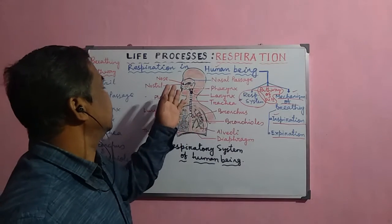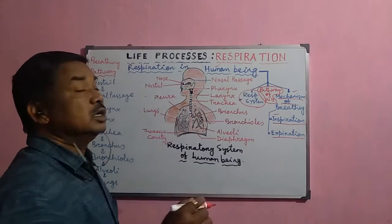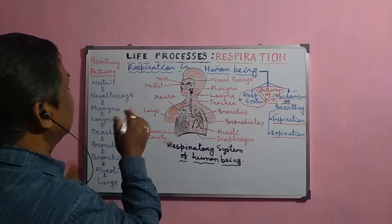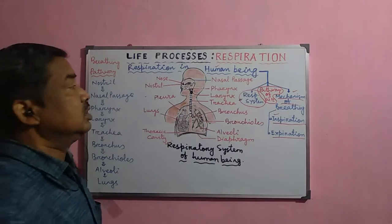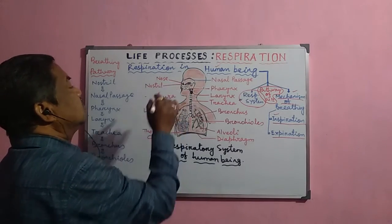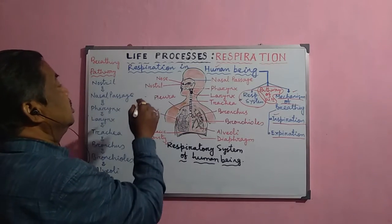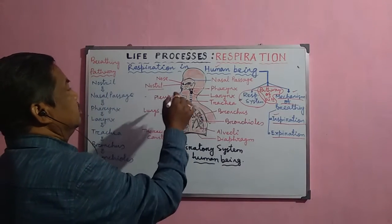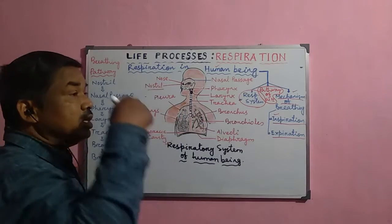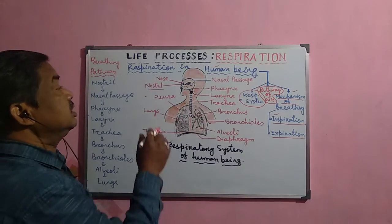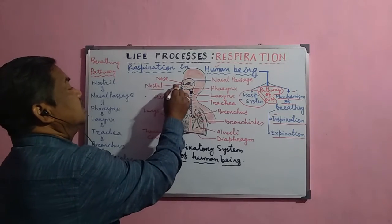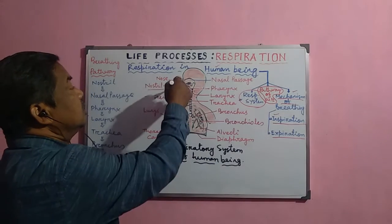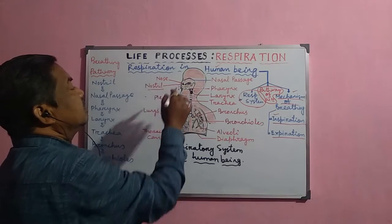Now, the important organs involved in the respiratory system: first is the nose, which is the external outgrowth consisting of cartilage. There is an opening through which air enters into the nasal passages, called the nostril. This opening faces downward, which is advantageous because particles in the air fall down due to gravitational pull, so fresh air enters.